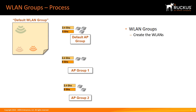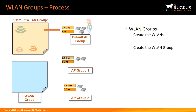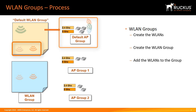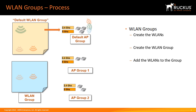First, you need to create your wireless LANs. Next, create a new wireless LAN group and then add the wireless LANs to that wireless LAN group. It is important to know that if you do not remove wireless LANs from the default wireless LAN group, they will continue to be broadcast on any access points that are members of that default access point group.